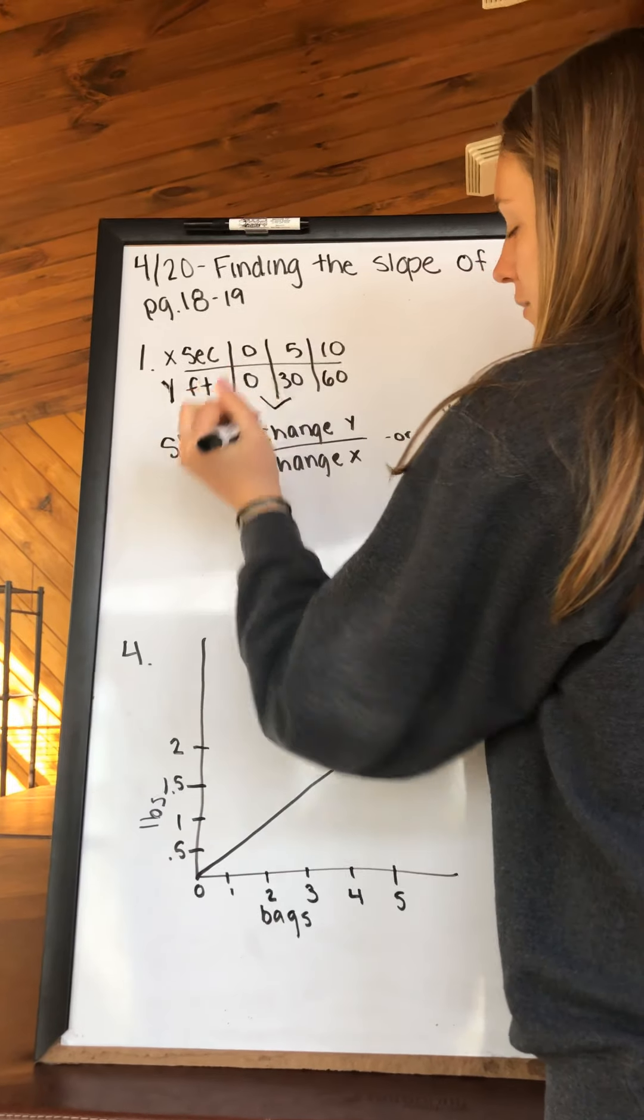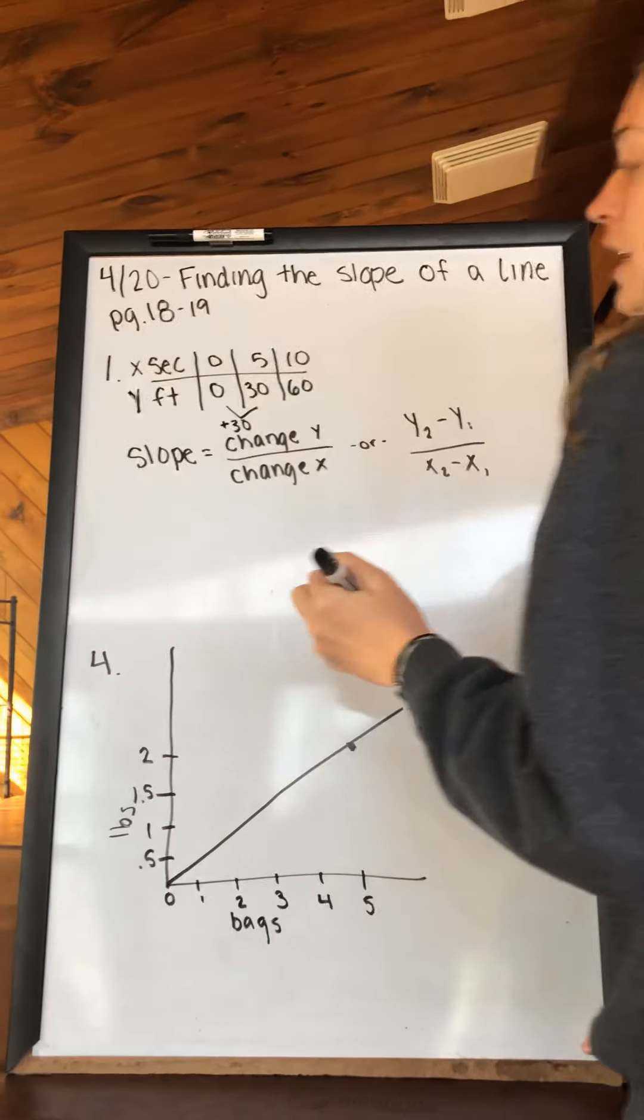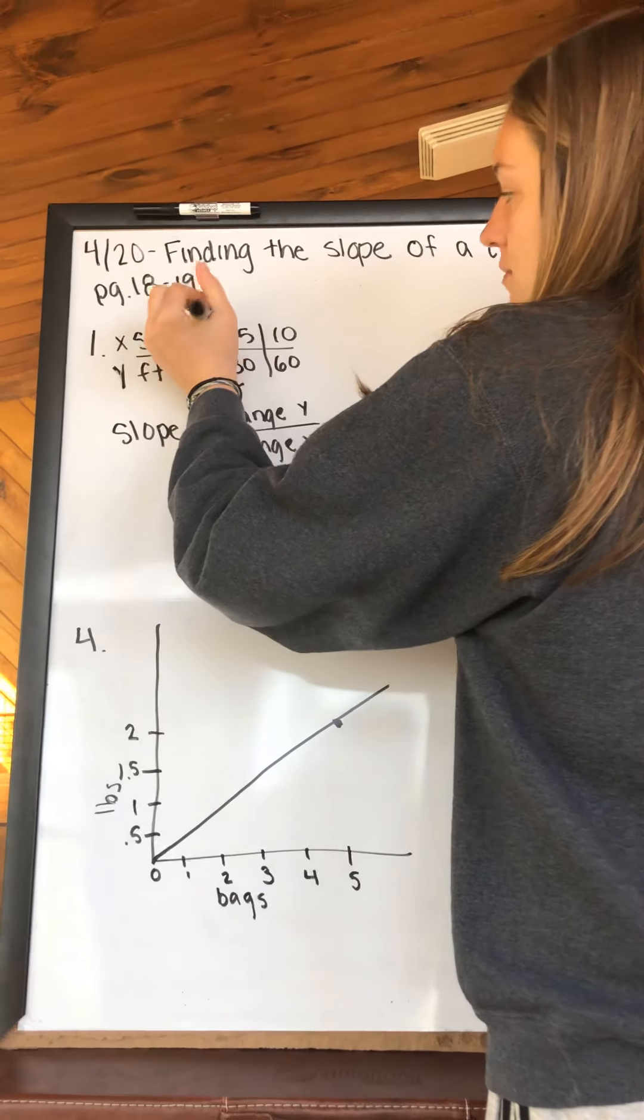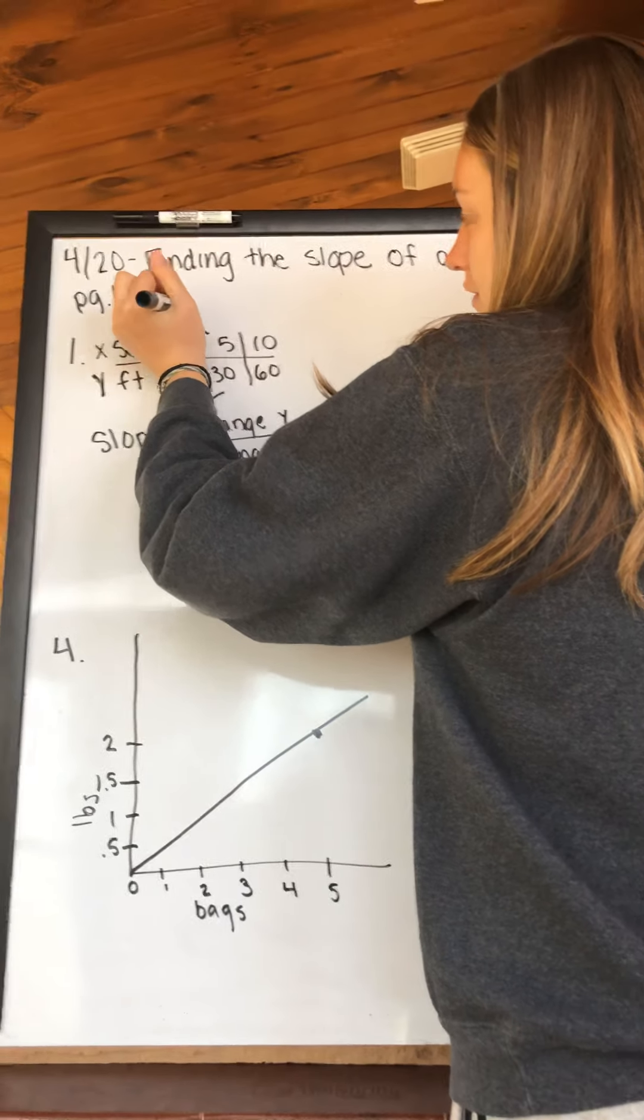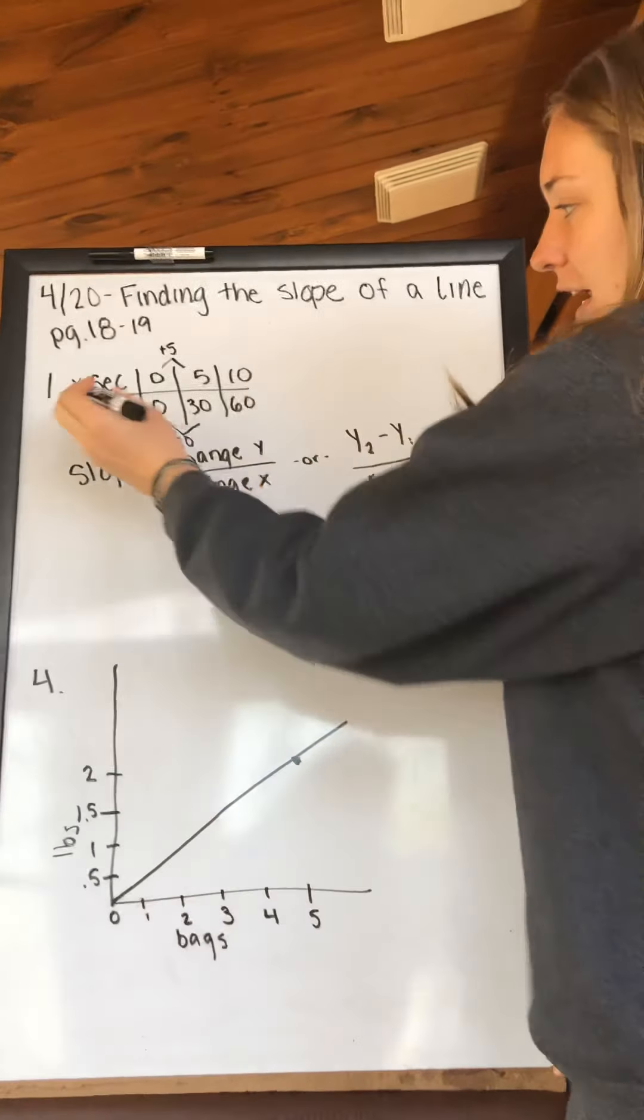Our change in y, we're going from 0 to 30, so our change in y is plus 30. Let's look at x. We're going from 0 to 5. Our change is 5. The formula is just change in y over change in x.